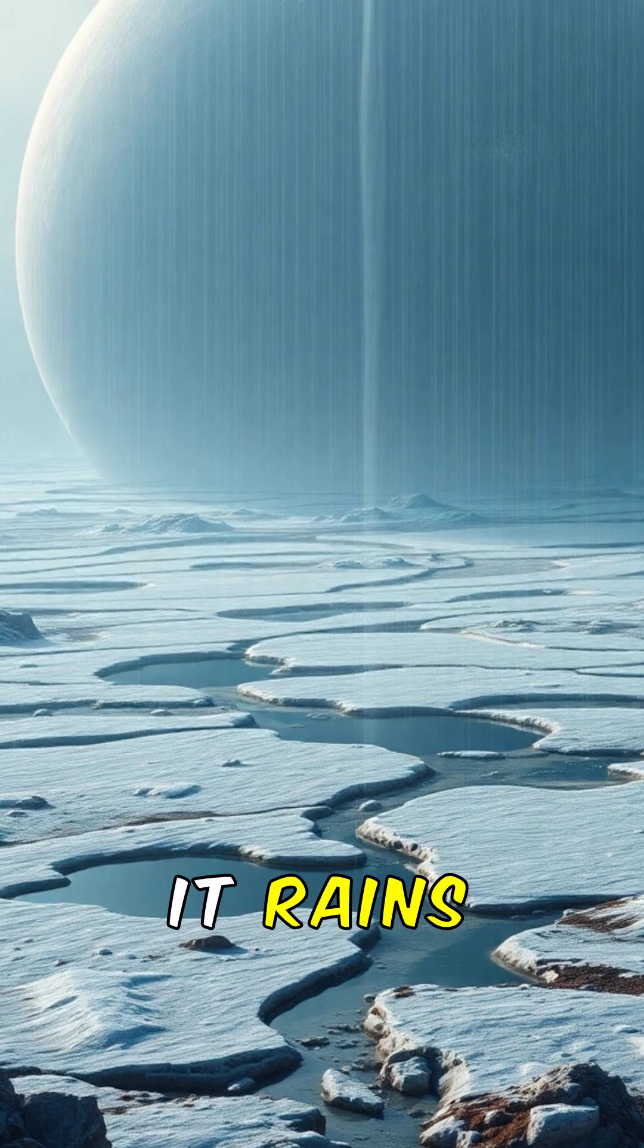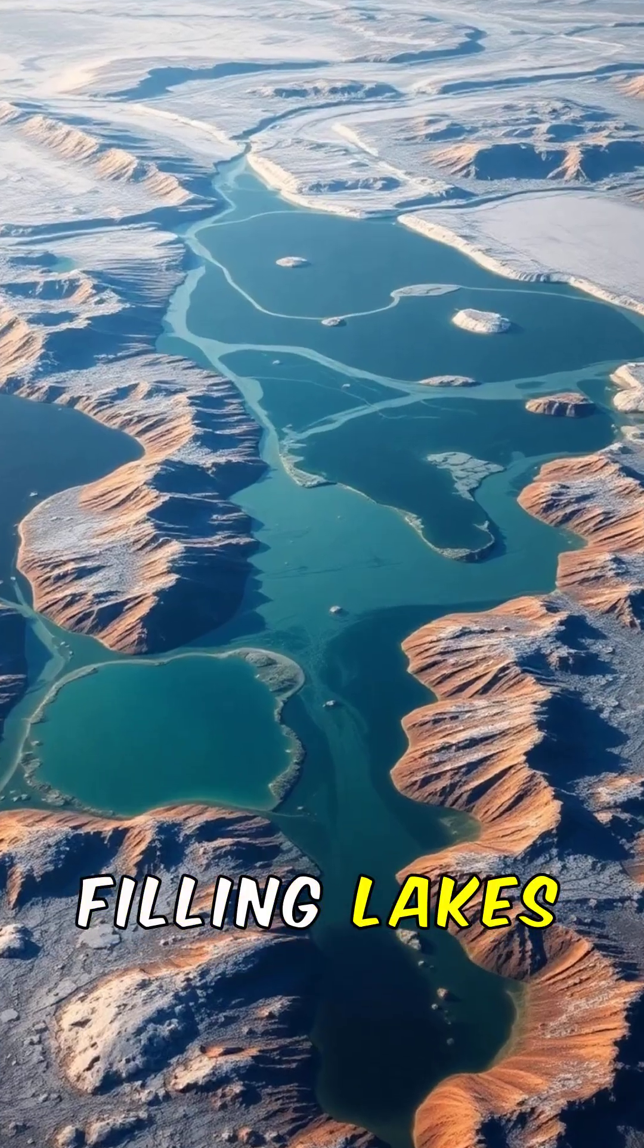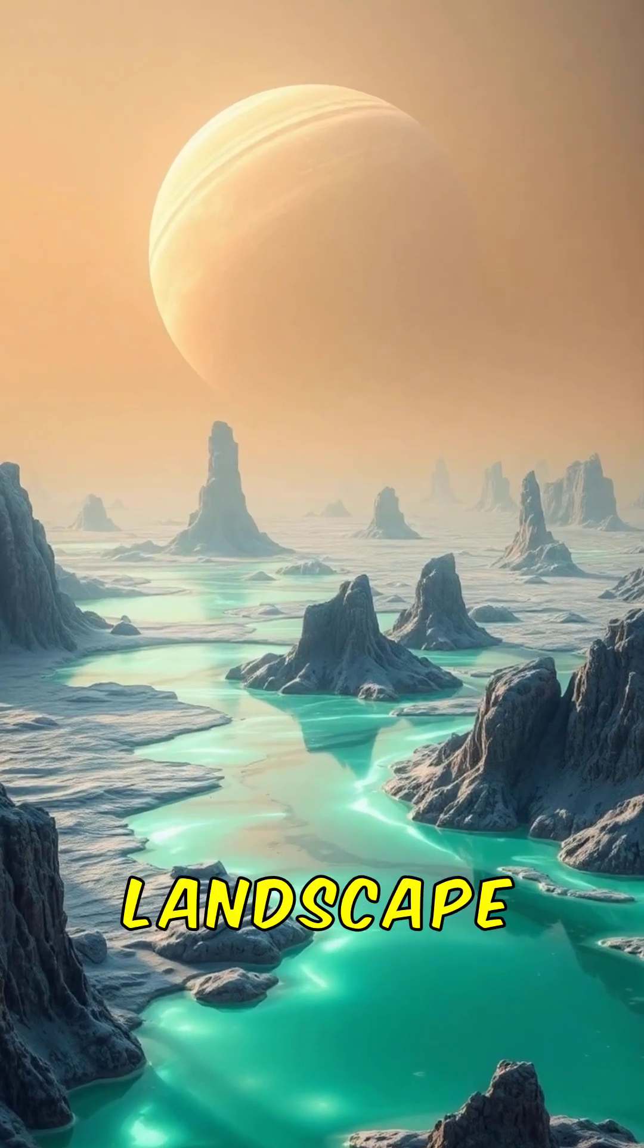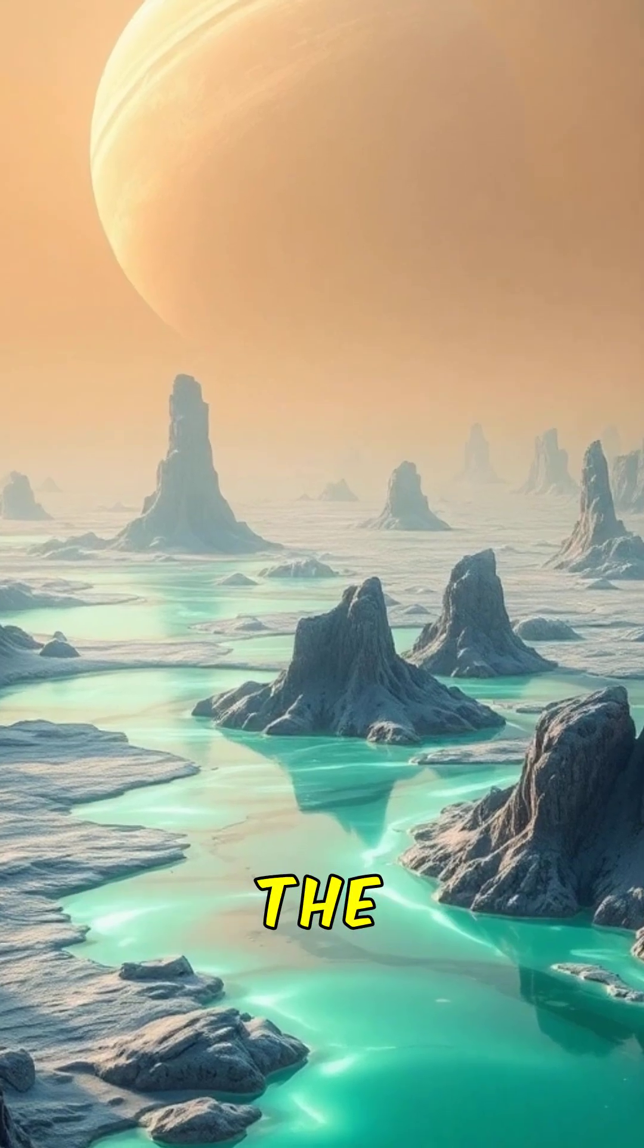On Saturn's moon Titan, it rains liquid methane, filling lakes and rivers across a frozen landscape far stranger than Earth.